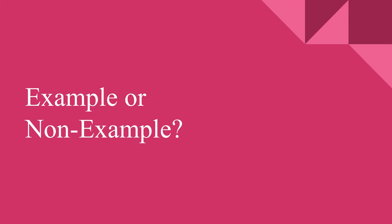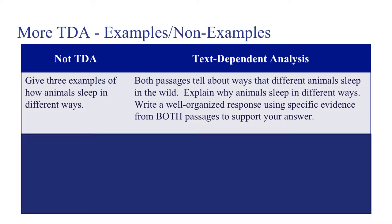Let's look at some examples and non-examples of text-dependent items. On the left side of the screen is the non-dependent item, and on the right is the text-dependent item. The non-text-dependent says: give three examples of how animals sleep in different ways. We can answer that from prior knowledge — some sleep in trees, some in burrows — based simply on life experience.